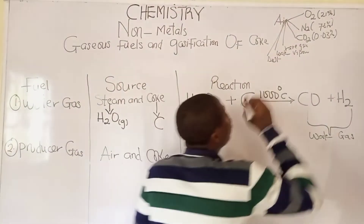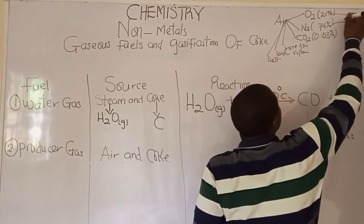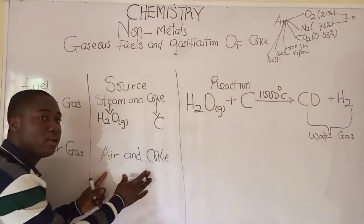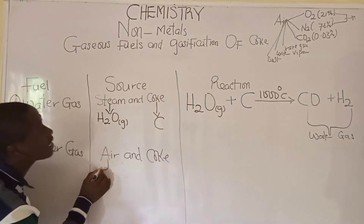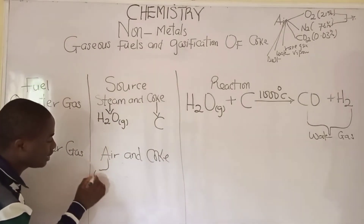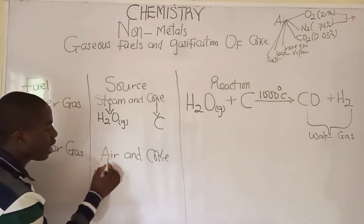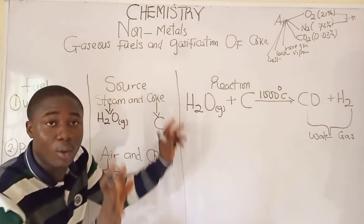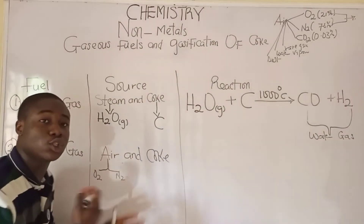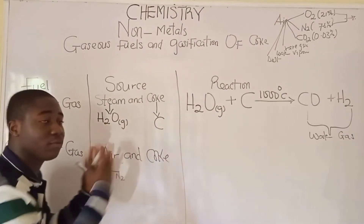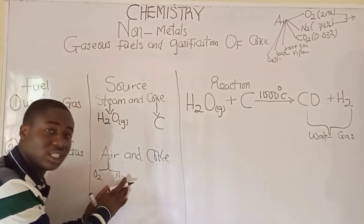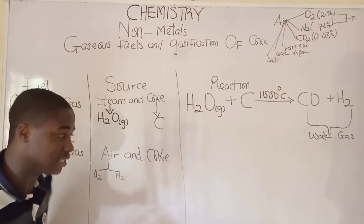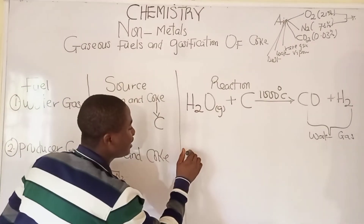In this reaction we use just two components of air: oxygen gas and nitrogen gas. When a stream of air containing oxygen and nitrogen reacts with coke, we get the producer gas.